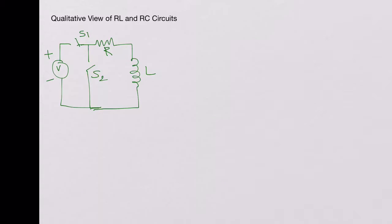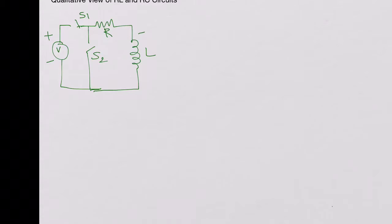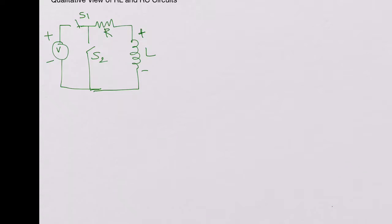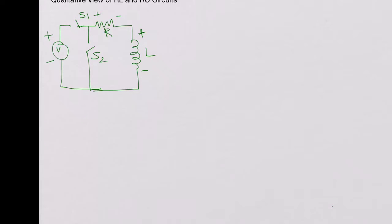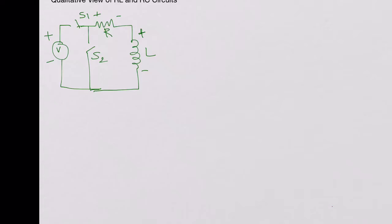Once you close switch S1, initially all the voltage is dropped across the inductor. There is no current flowing through the circuit. Then slowly the voltage across the inductor keeps falling and the current keeps increasing until the current reaches a value of V over R.